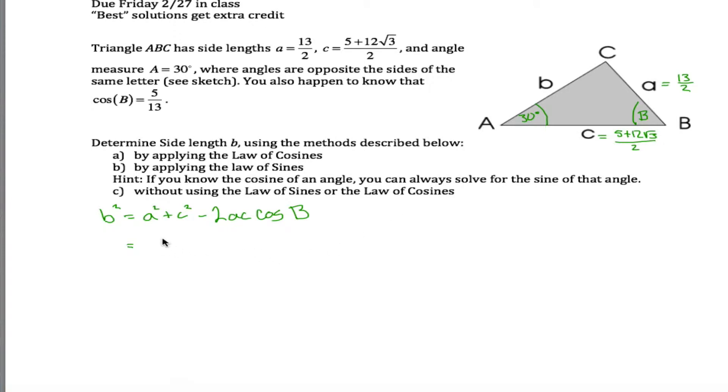So let's see. A is given to be 13 halves. So I get b squared is 13 halves squared plus c squared. Ah, 5 plus 12 root 3 divided by 2 squared minus 2 times A times C times cosine of B, which fortunately, I guess I don't even have to write cosine of B because that was given to me. The cosine of B is 5 thirteenths.